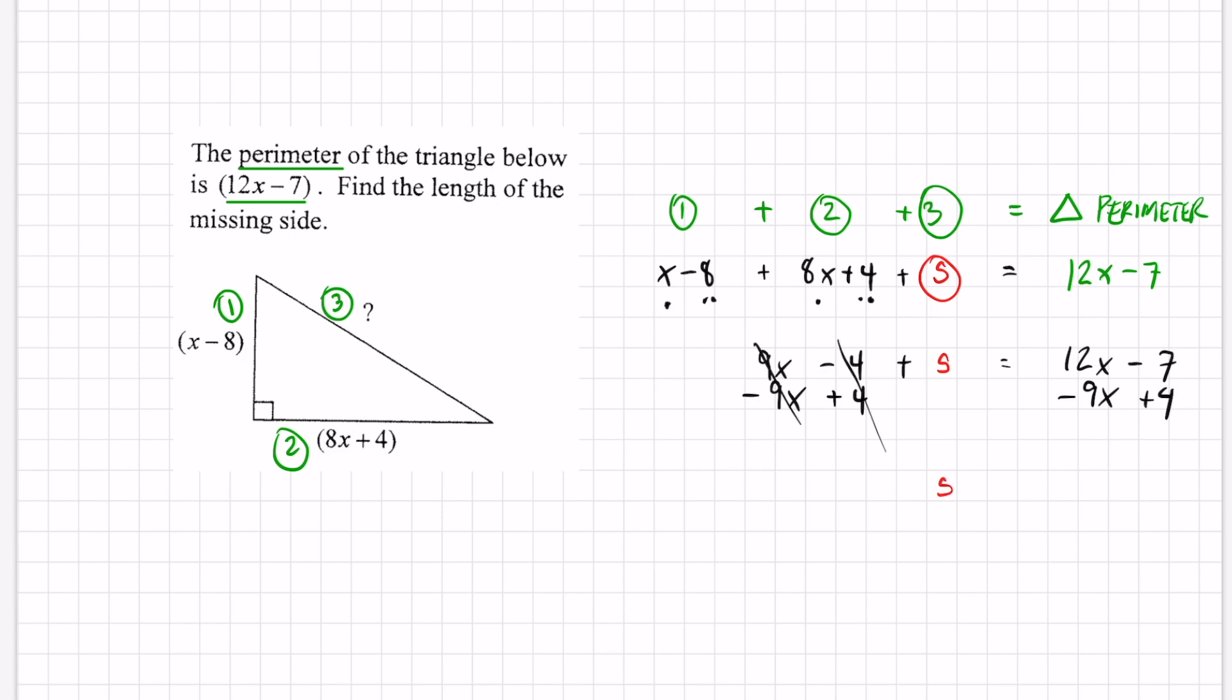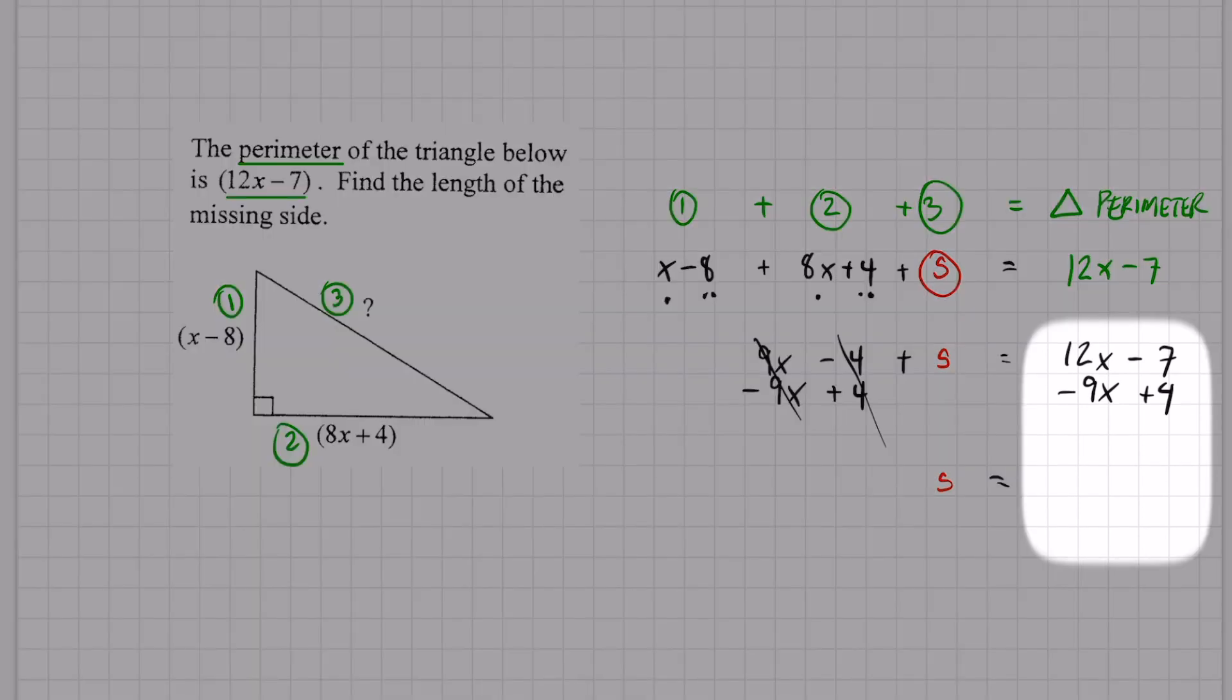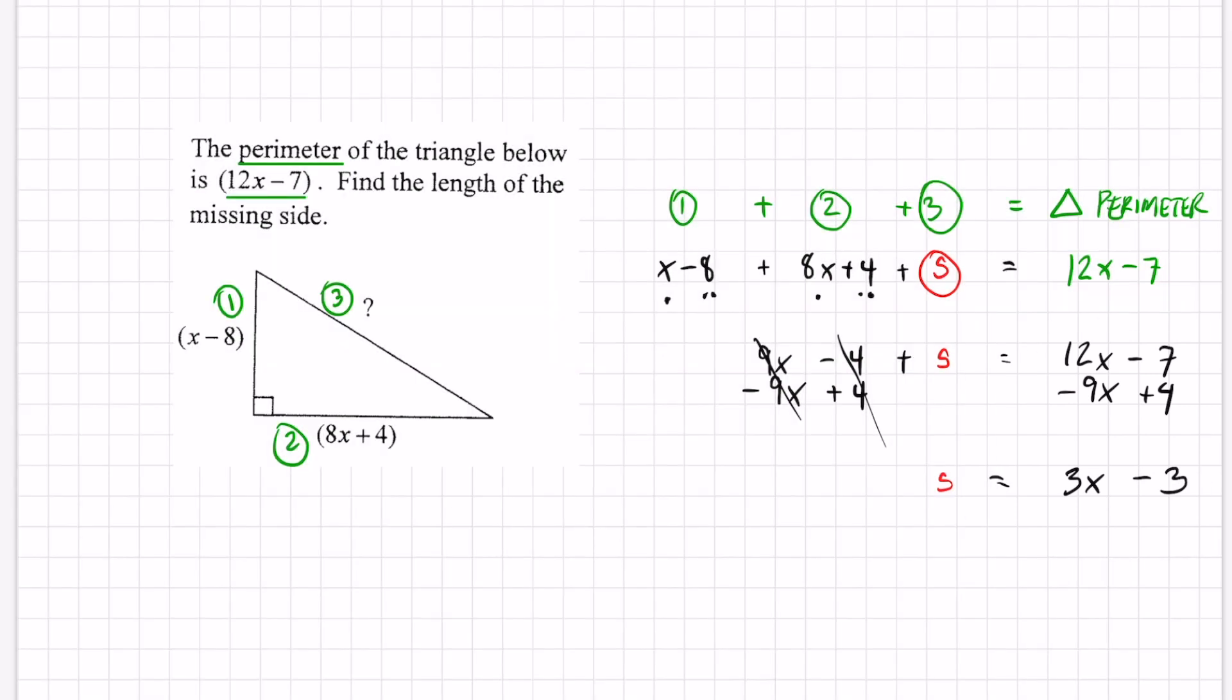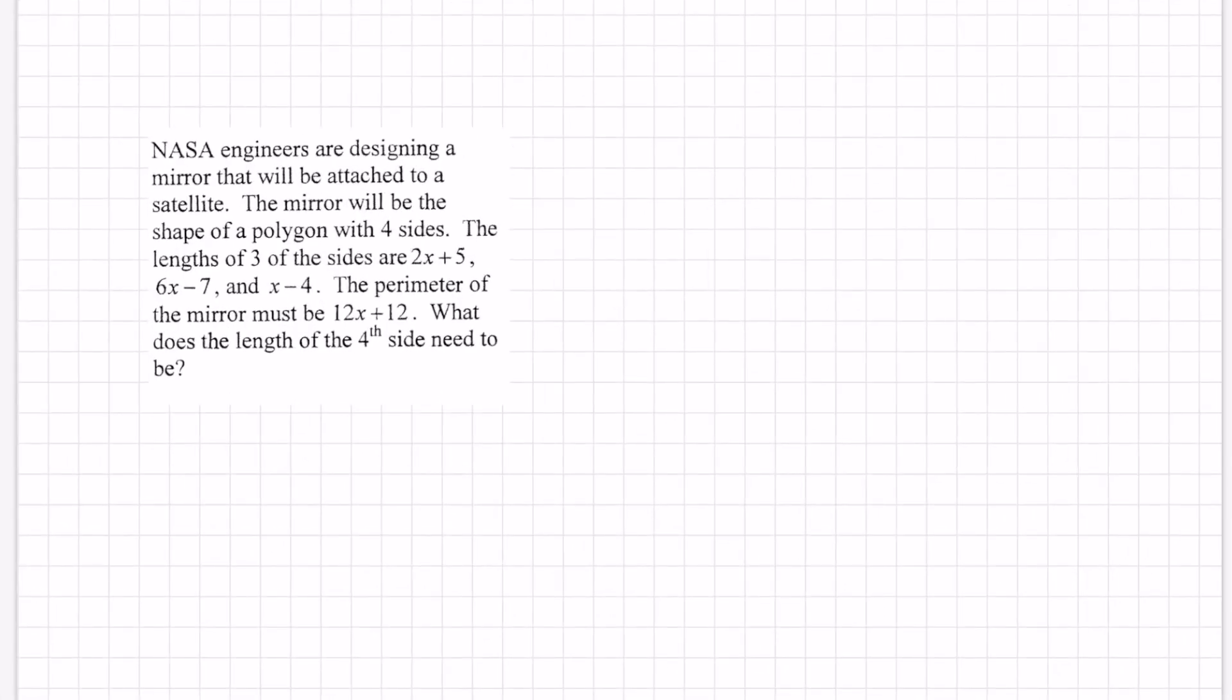I'm left with s which is the missing side length and I just got to combine like terms on the other side. 12 minus 9 is 3x and negative 7 plus 4 is negative 3. So the missing side length in this mystery is 3x - 3. One more practice and then we'll try one on your own.